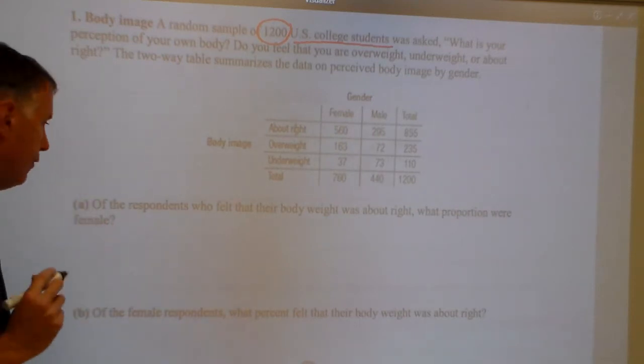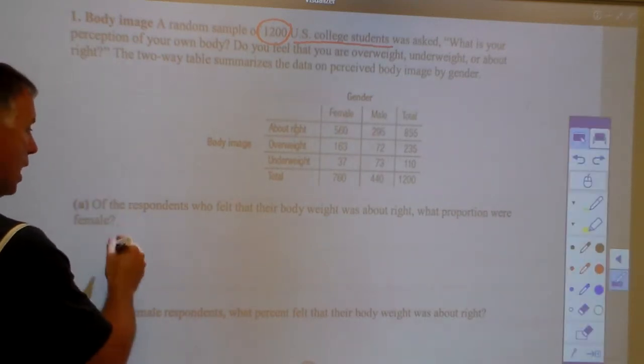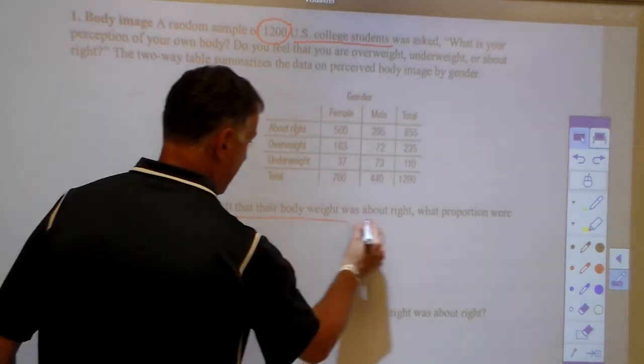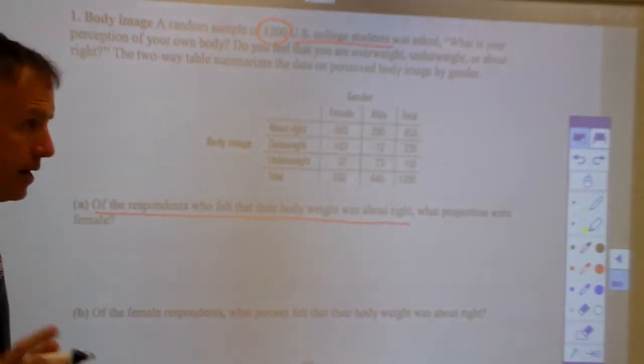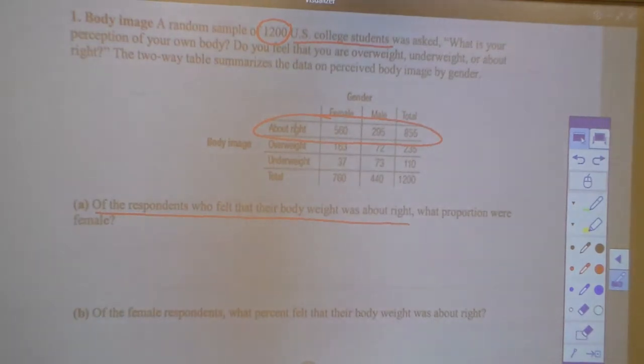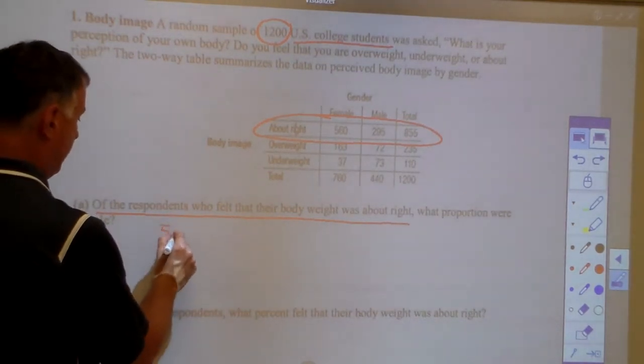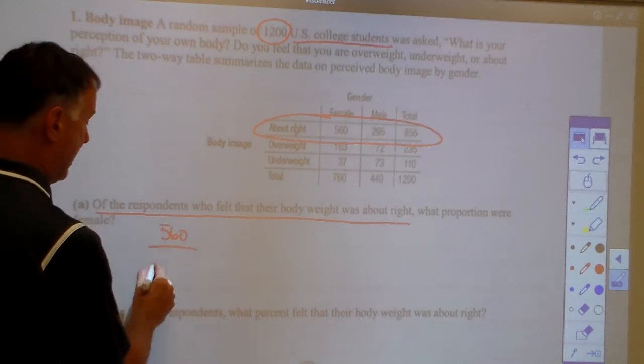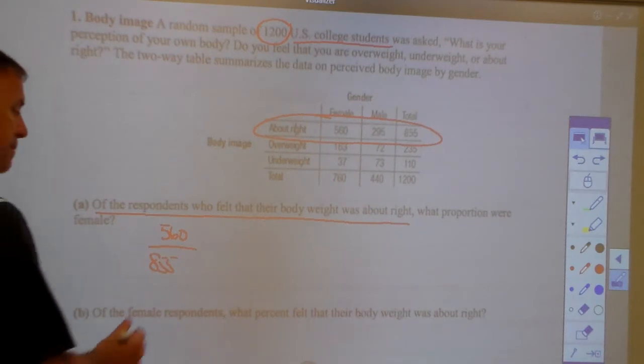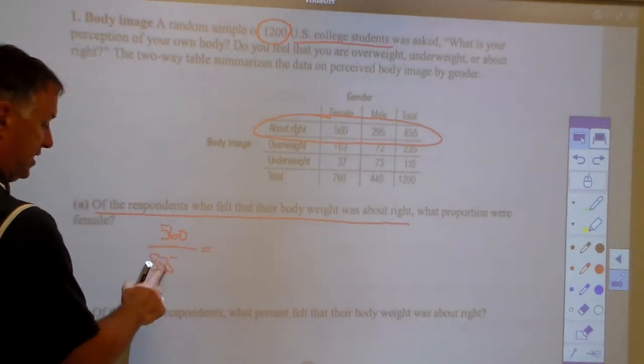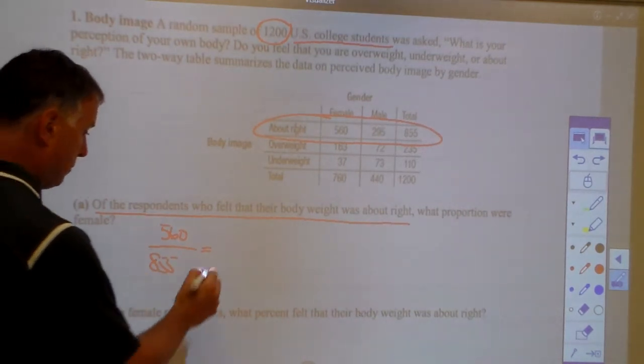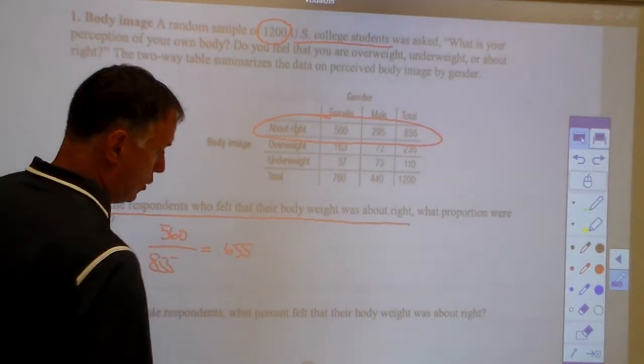What proportion were female? So we have to look. What are they looking for? They want to know of the respondents who felt their body weight was about right. So given that their body weight was about right, so I'm looking at just this row, what proportion were female? So I would say 560 divided by 855, and you want to do that division out as well. The AP statistics test wants to see this most important, but they do want to see the percentage as well. And I think that's going to be 0.655, according to my notes.